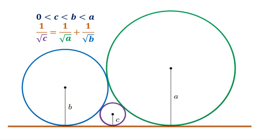Before I proceed to the solution, I would like to emphasize that the radii are actually perpendicular to the horizontal line at the points of tangency. So this right here is 90 degrees, this one is also 90, and this one is also 90.